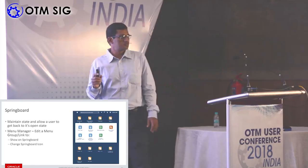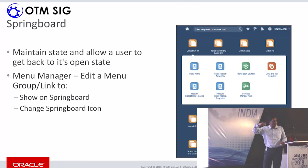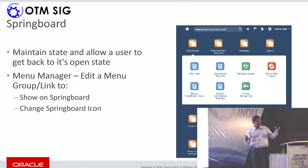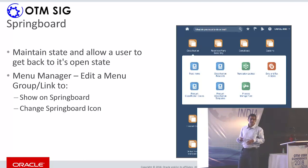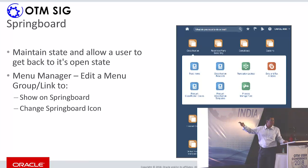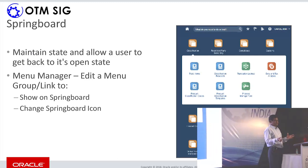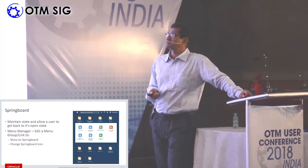This is what we call the springboard — a navigation feature. For example, you have a main menu called 'Classification' with sub-items like trade agreements, classification, lookups and so on. Previously, clicking the homepage would clear your navigation state and you'd have to drill down again from scratch. Now the system retains state, so when you return to the homepage it lands back where you were. You can also add new menus or group links, change icons on group links as desired.